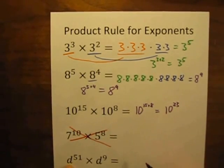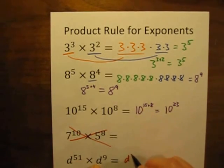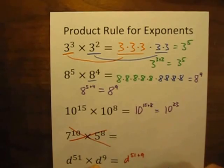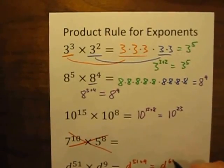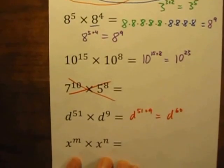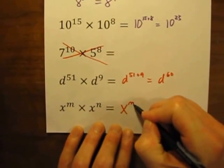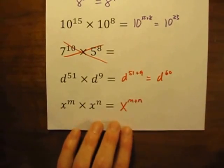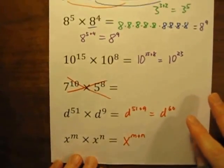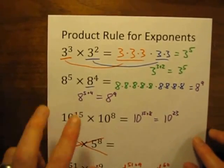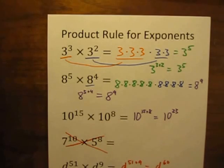How about this: d to the 51st times d to the 9th. That's just going to be d to the 51 plus 9, which is going to be equal to d to the 60th power. And finally, x to the m times x to the n is simply x to the m plus n. So that's the product rule for exponents. When the bases are the same and you're multiplying them together, just simply add the exponents.